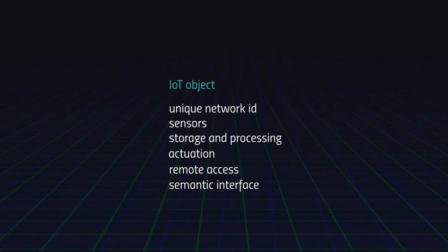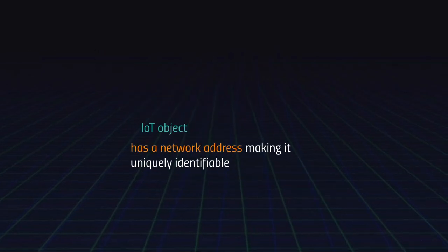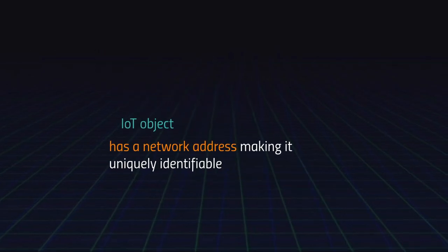The object must have some sort of actuation which allows it to act based on some sort of programming — either to display something, voice something, or react to specific changes in its environment. By virtue of being connected to the network, it allows remote access to its specific locale and to itself. And more often than not it would have some sort of semantic interface allowing humans to interact with it — to engage with its data and its storage and processing powers.